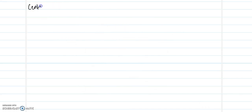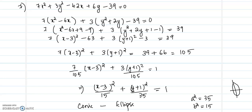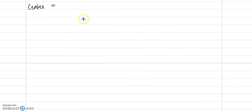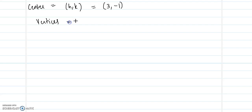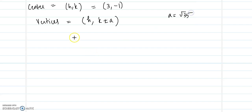The center of the conic: since we have (x minus 3) and (y plus 1), the center will be (3, minus 1). So the center h,k equals (3, minus 1). The vertices are given by (h, k plus or minus a), where a equals root of 35. That gives vertices at (3, minus 1 plus or minus root 35).